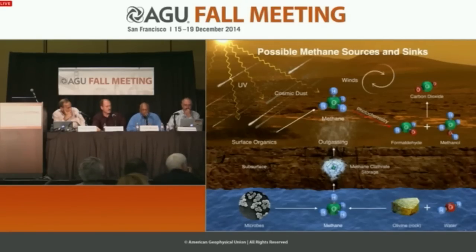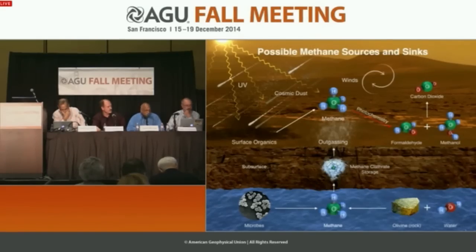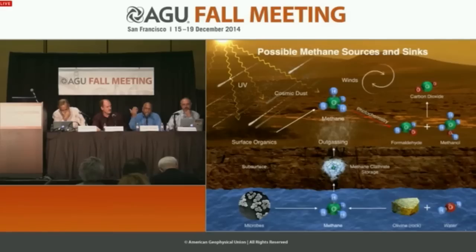Whether methane was produced biologically or geologically or by the surface organics, once it's in the atmosphere, the winds are going to move it around. In a matter of a few months, methane is going to be distributed over the entire planet.